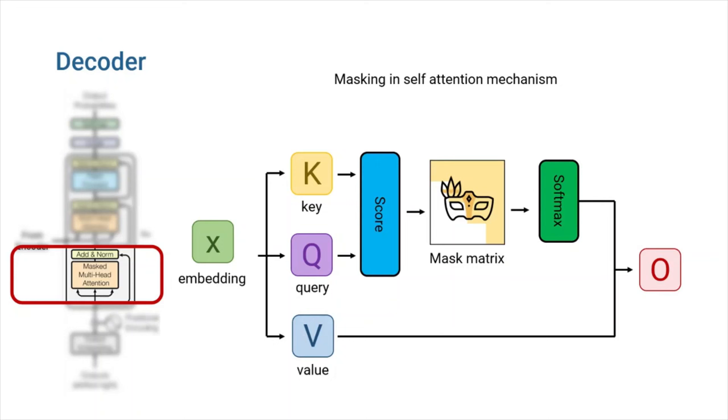Multiplying the output of softmax with our value matrix will prevent our model from accessing the words that are not translated yet. If you want to learn more about the masking procedure, I recommend you watch Leonard Swinson's video on this topic. Keep this in mind that here again we are using multi-head attention. So, these calculations will be done for several copies of key, query, and value matrices. After this attention layer, our data goes through another add and norm layer which we have already covered.